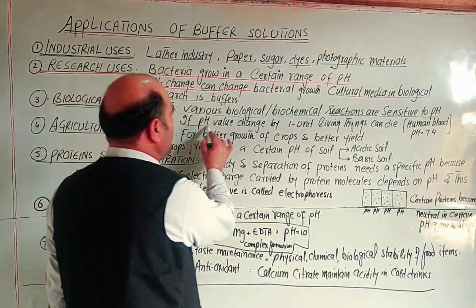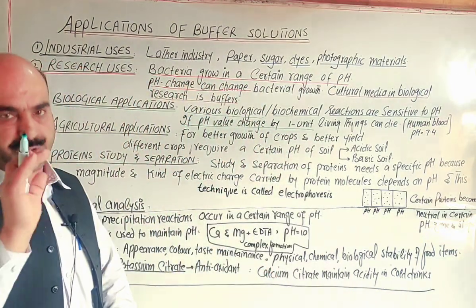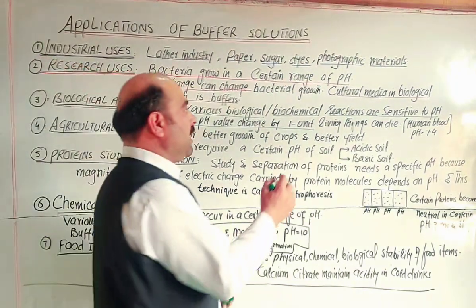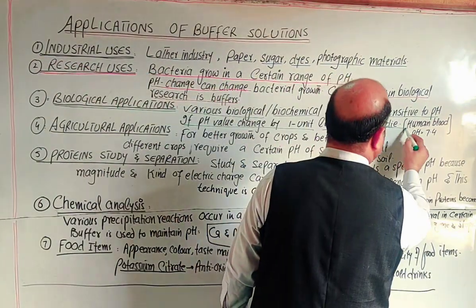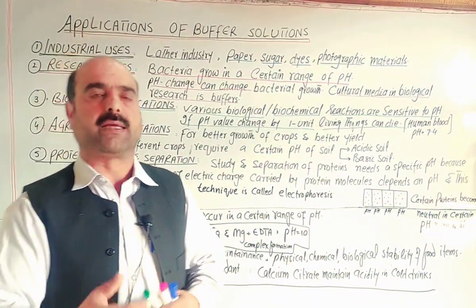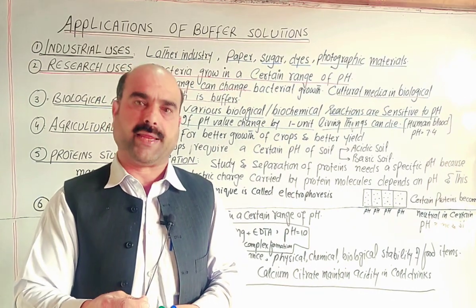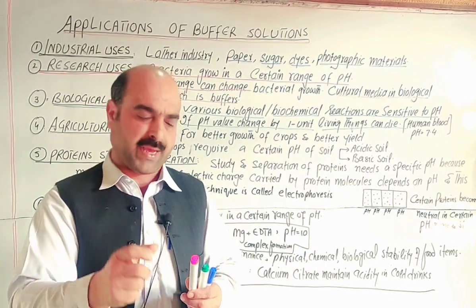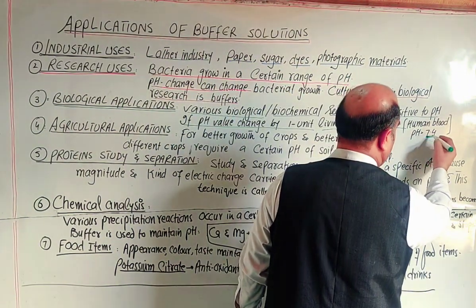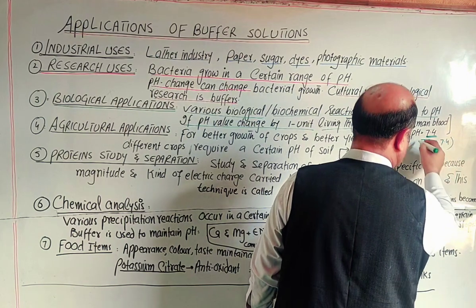If the pH changes by even one unit — for example, from 7 to 6 — living things can die. This mechanism is naturally arranged. Human blood has a specific pH value of 7.4, or within the range of 7.2 to 7.4.